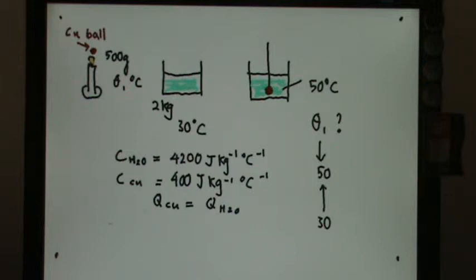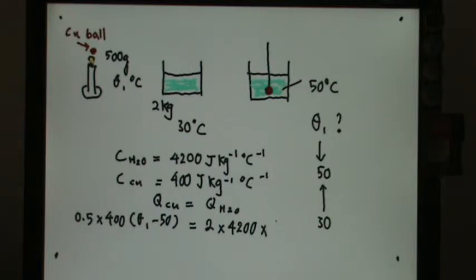You need to write down MCθ here and MCθ here. So the M here is 0.5, the C is 400, and the change is θ1 minus 50 since θ1 is greater than 50. Then you have water 2 kg, and the C of the water is 4200, and the change of the water is 50 minus 30.